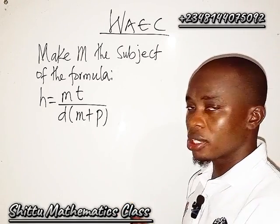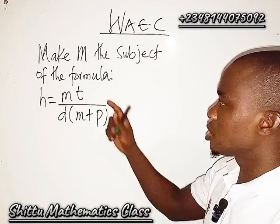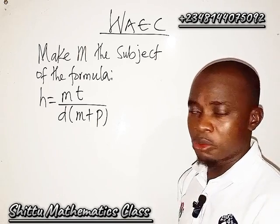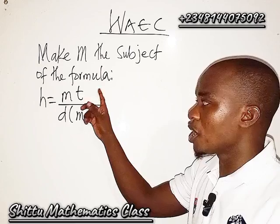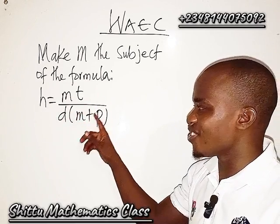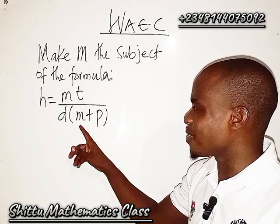Let's see how we are going to solve this WAEC problem. This is coming from change of subject of formula. We have h equals mt over d into bracket m plus p.